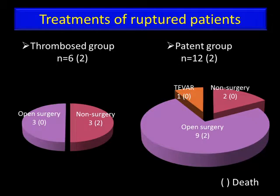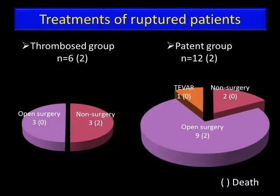This slide shows the treatment of ruptured patients. In the thrombosed group, six patients had ruptured in the acute phase: three underwent open surgery, and the other three did not undergo surgery due to their refusal. In the patent group, 12 patients had ruptured. Open surgery was performed in nine patients, and two of them died intraoperatively. TEVAR was performed in one patient.